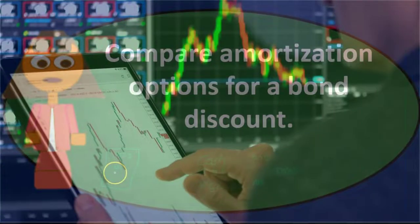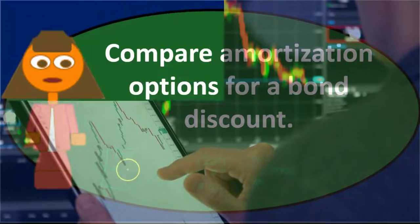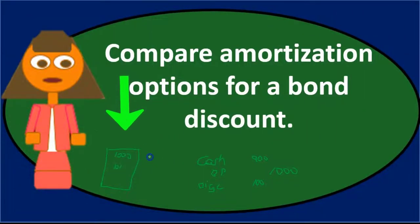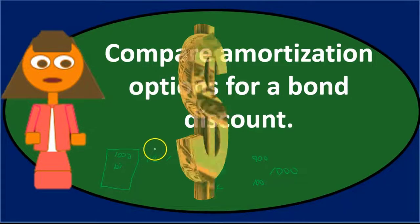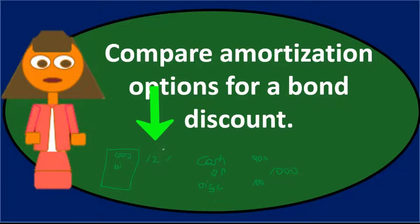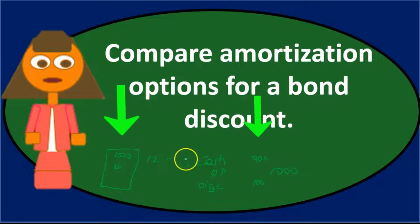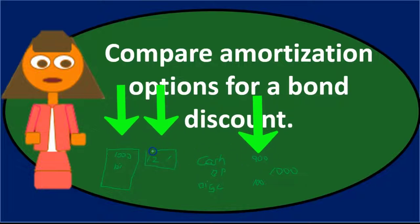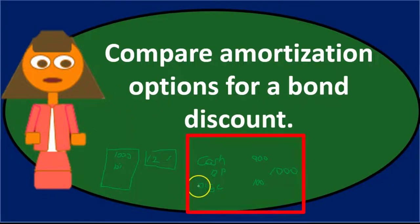We put the amortization to interest expense because the discount exists due to interest rate differences. If our stated rate is 10% but the market rate is 12%, no one will pay $1,000 for our bond when they can earn 12% elsewhere. So we sell it at a discount — say $900 — to compensate. That's why the discount is really a difference in interest and gets written off to interest expense.